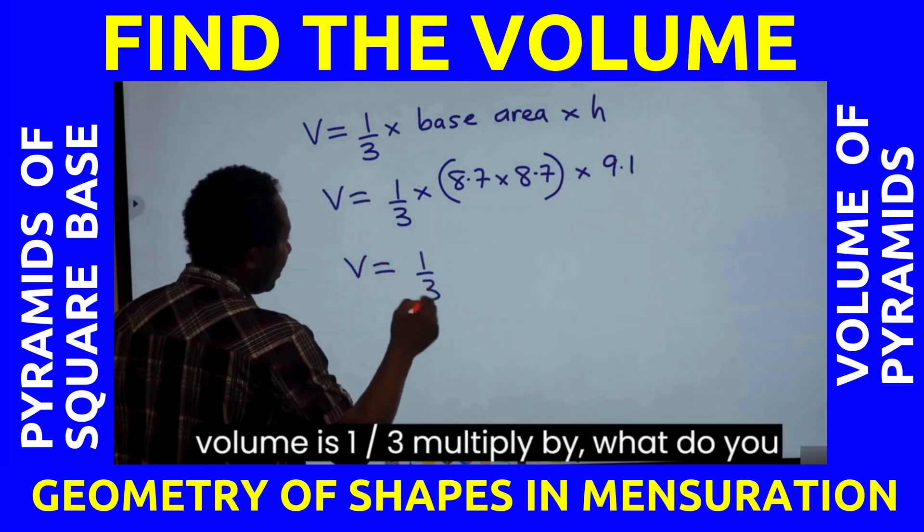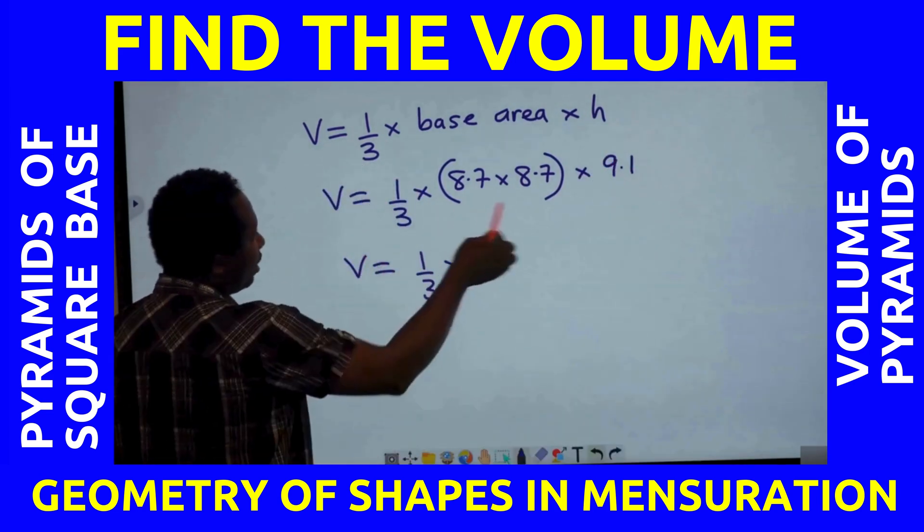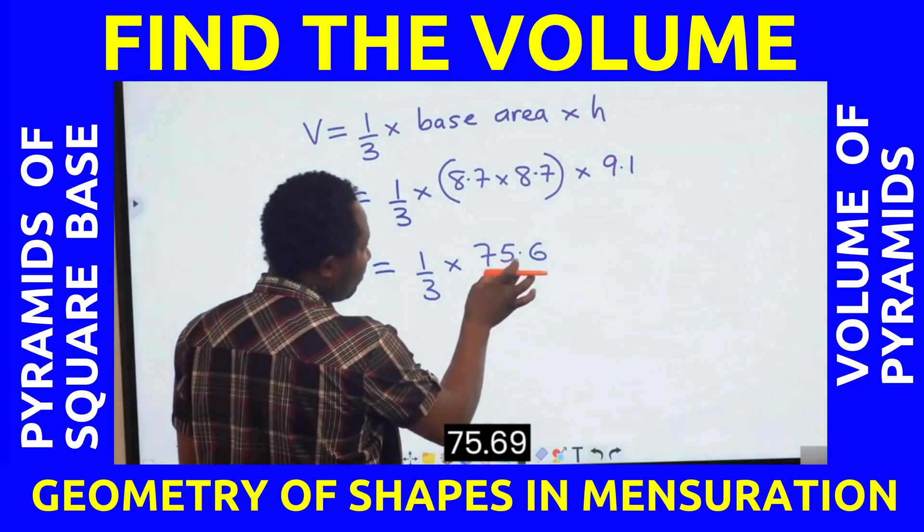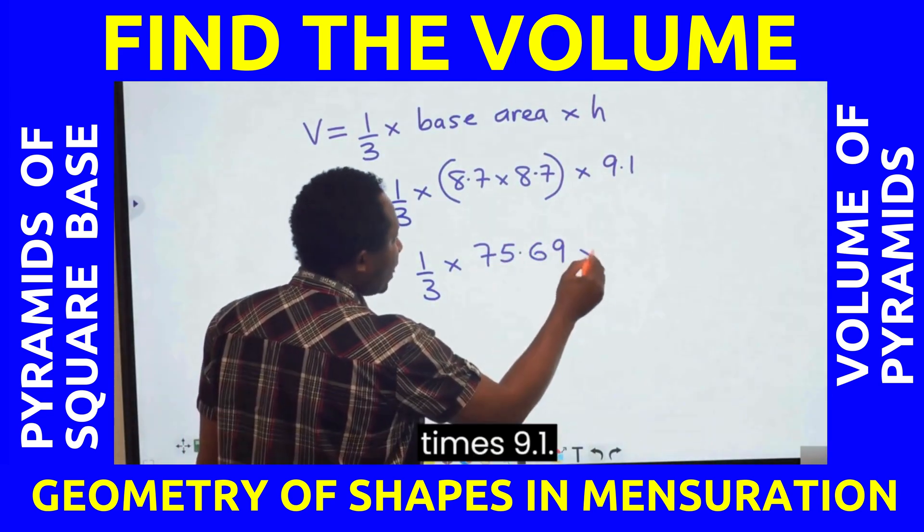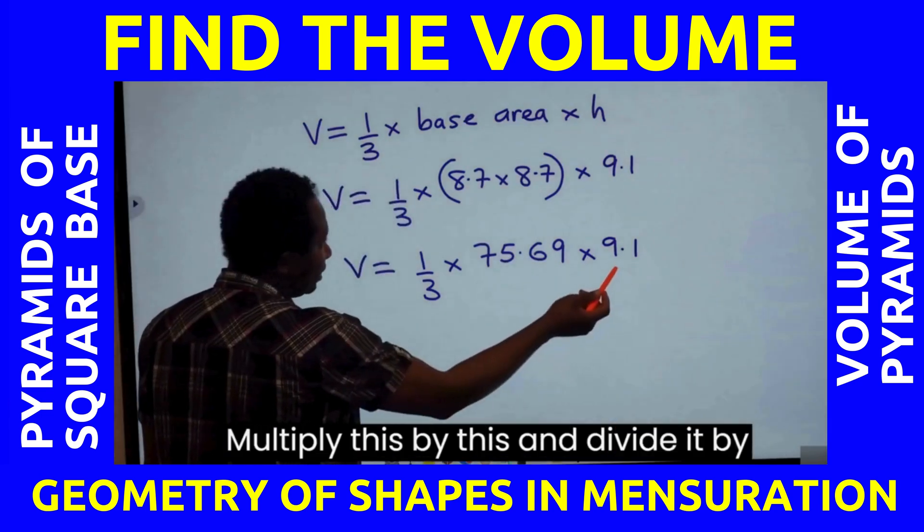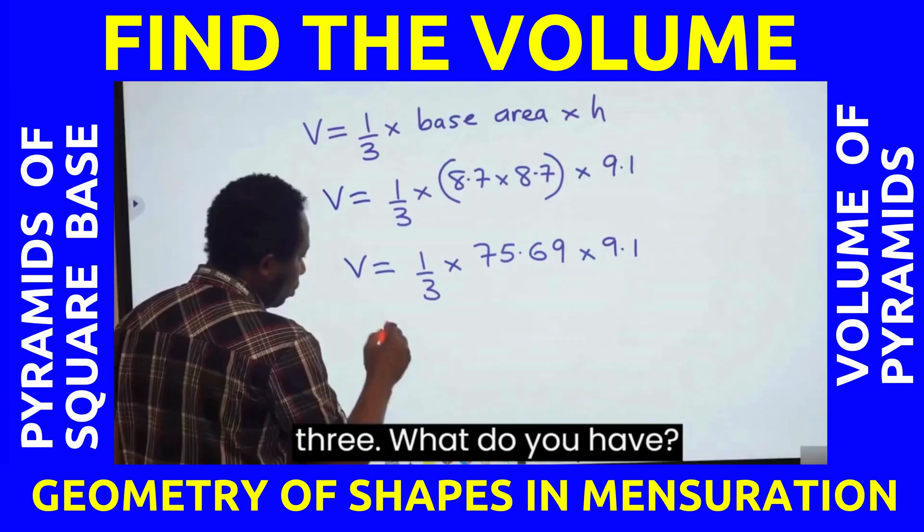The volume is 1 over 3 multiplied by, what do you have here? 75.69 times 9.1. Multiply this by this and divide it by 3. What do you have?